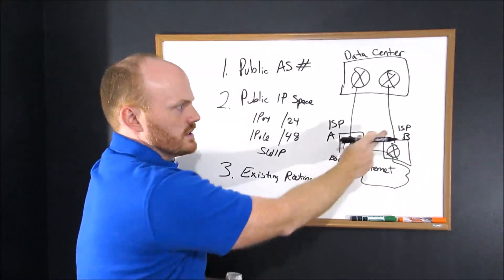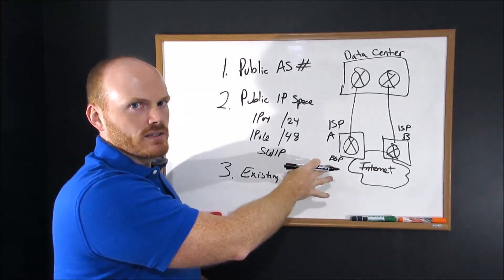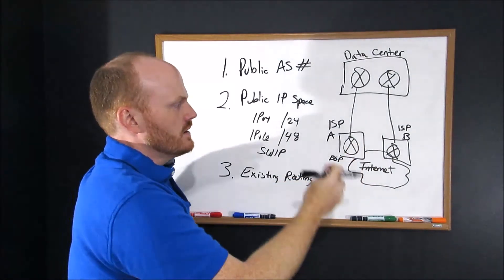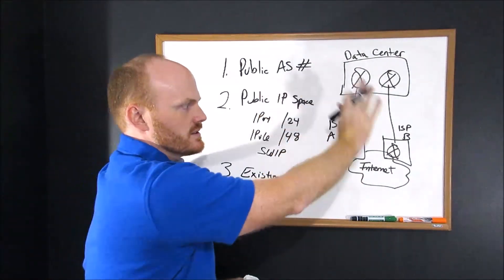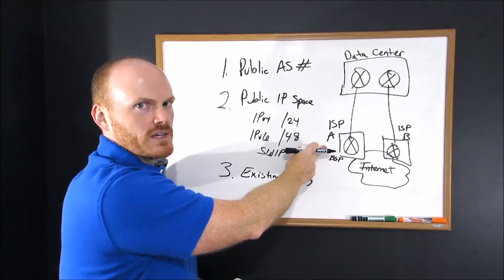You're simply going to give the second ISP the same exact BGP information you gave the first ISP. They're going to mirror the configs on their side. Using this method, you can easily just keep adding ISPs and keep giving them the same exact information every time.